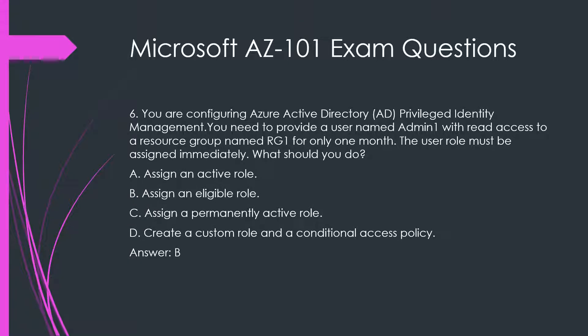Question 6. You are configuring Azure Active Directory Privileged Identity Management. You need to provide a user named Admin1 with read access to a resource group named RG1 for only one month. The user role must be assigned immediately. What should you do?